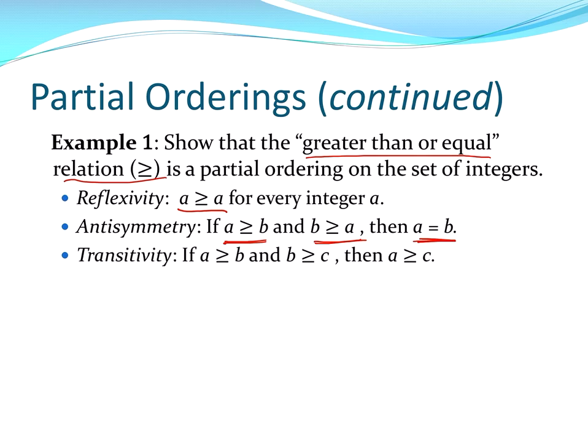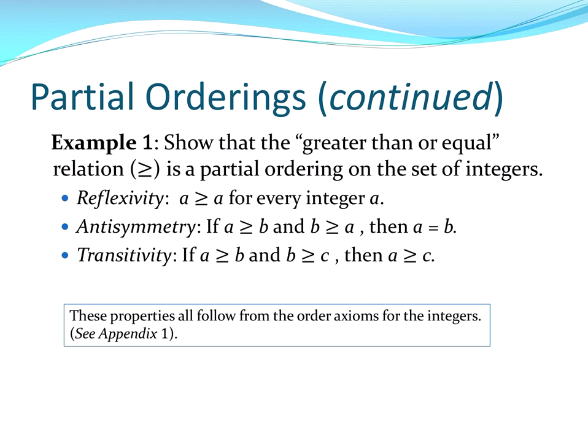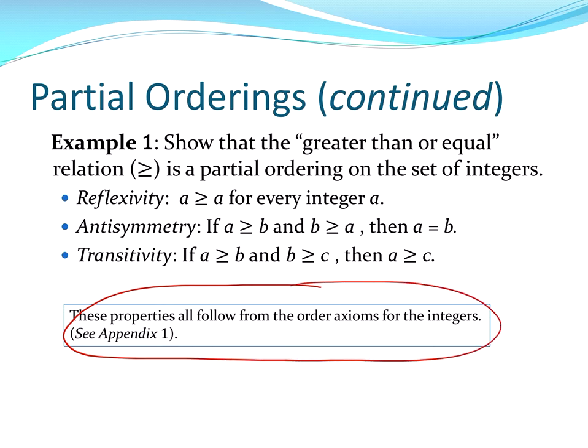And finally, transitivity: a greater than or equal to b and b greater than or equal to c implies a greater than or equal to c. That's all true. So this would be a poset, or a partial ordering on the set of integers. These follow from the axioms on the integers — see appendix one for those.